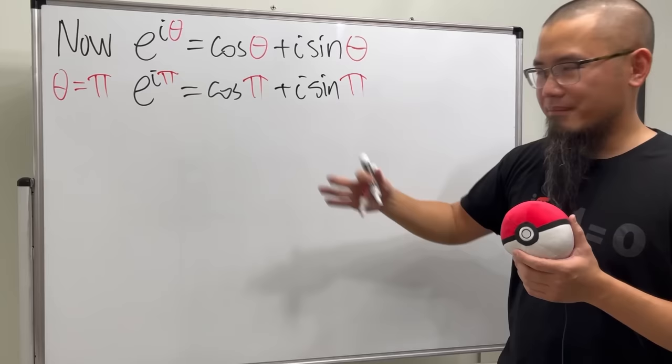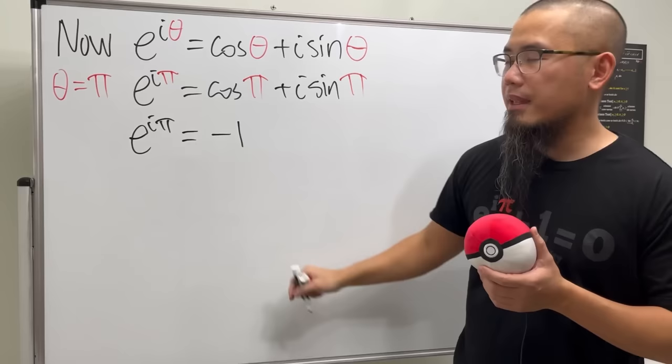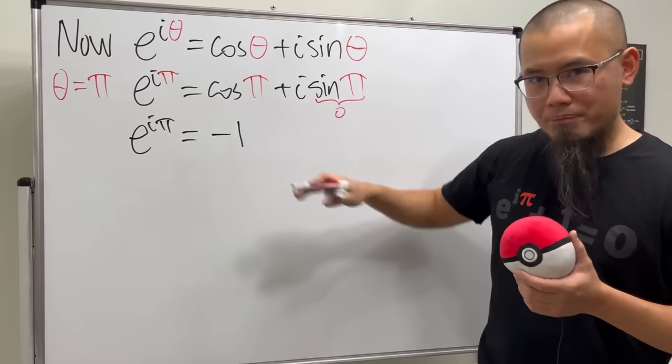On the left-hand side, we have e to the i pi, and then this is equal to cosine pi, which is going to be negative 1. Well, sine pi is just equal to 0. 0 times i doesn't matter anymore. Have a look.